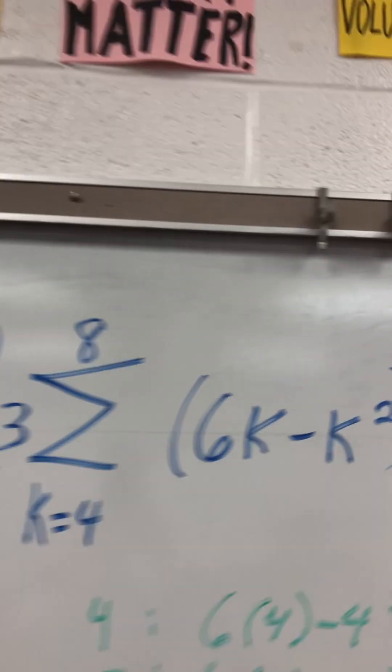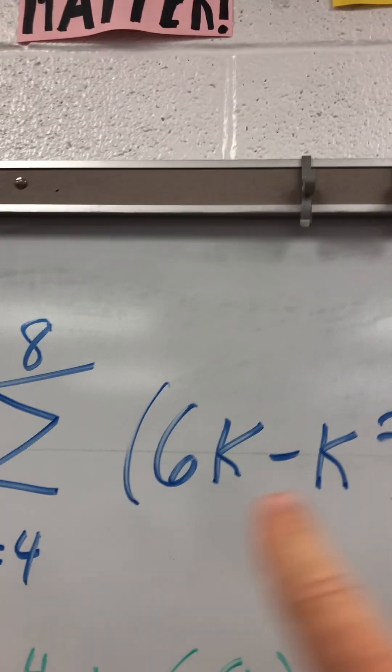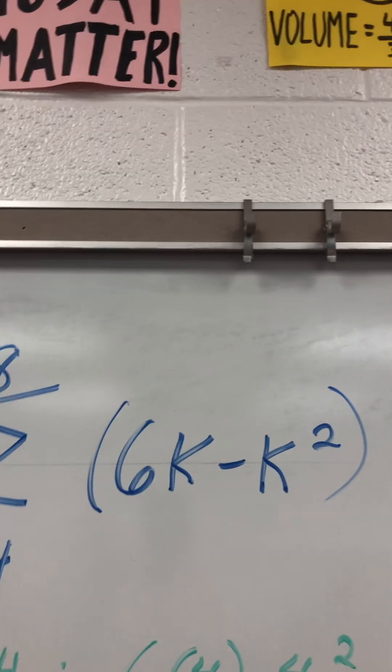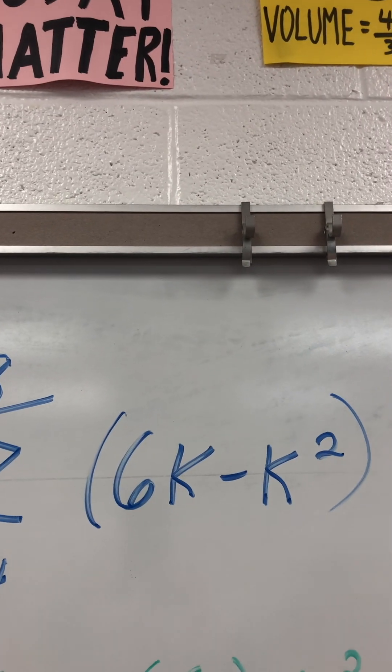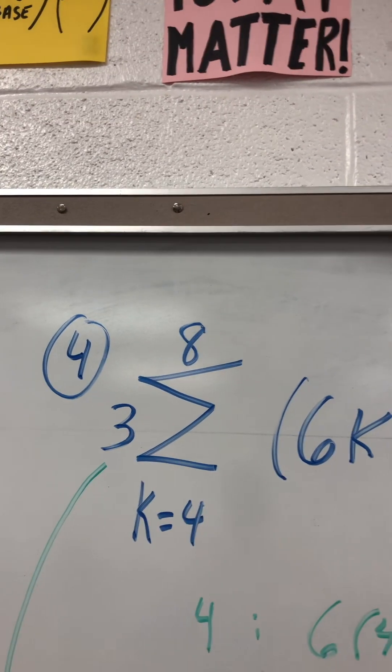Over here we have a squared term. We actually have two letters in our problem here. And here we have a number times the sigma.